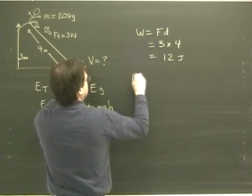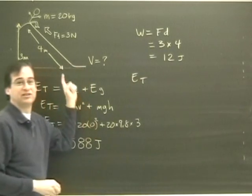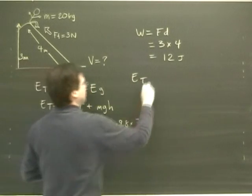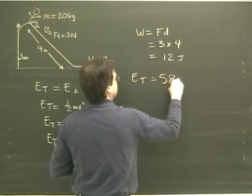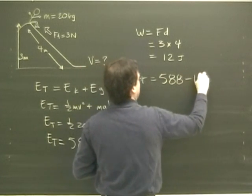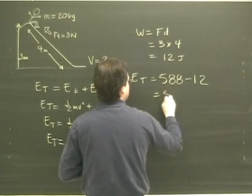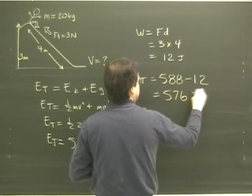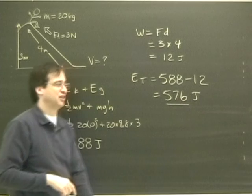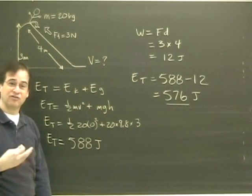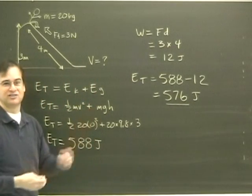So my total at the bottom is not going to be the same as the total at the top because I've lost some. So I take the 588 minus 12, and that gives us 576 joules. That's how much energy I have at the bottom. Now I've just got to find out what form it's in, and I can solve for the velocity.